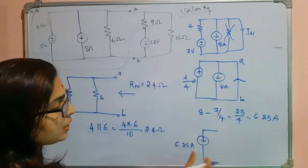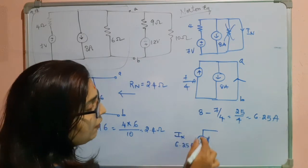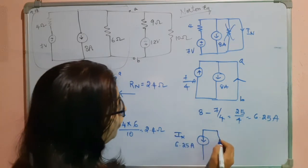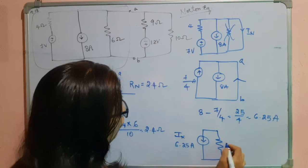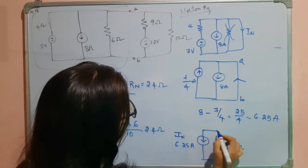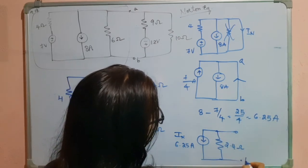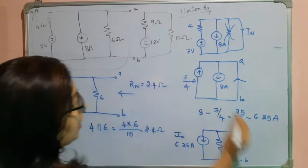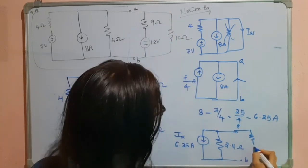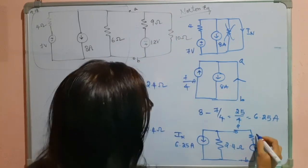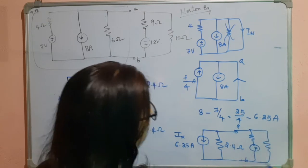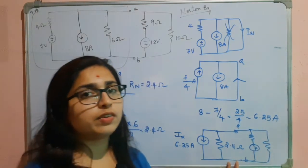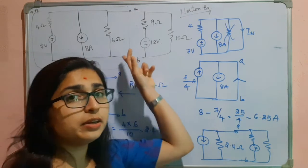So your resultant Norton current will be having this direction with the Rn as 2.4 ohms, and then this is the terminals A and B. So now take this part and write it. 9 ohms, this is minus plus, and this is 10 ohms. So this is the Norton's equivalent to the left of A and B terminals.